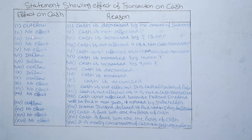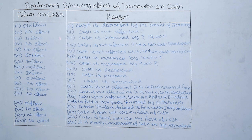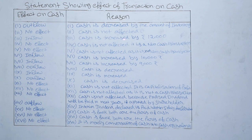For the second item — purchase of goods on credit — when we purchase goods on credit there is no outflow of cash from the business, so there is no effect on cash. Reason: cash is not affected. For the third item — sale of goods costing ₹10,000 for ₹12,000 for cash — we consider only the cash value. Cash increases by ₹12,000. Effect: inflow. Reason: cash is increased by ₹12,000.